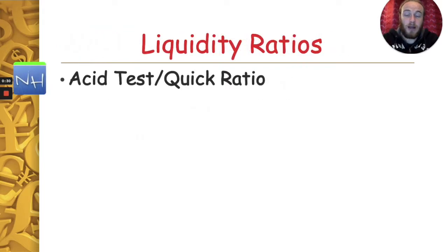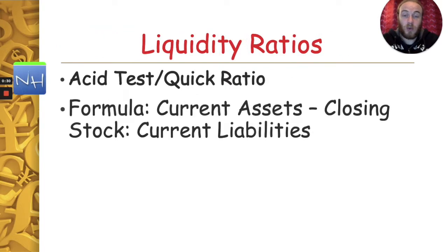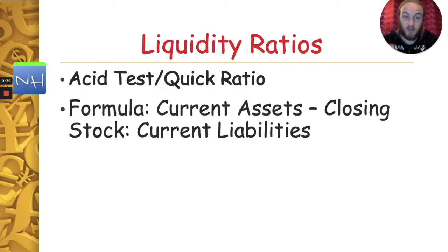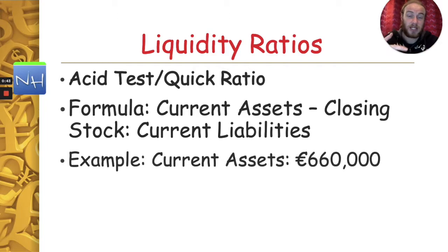So what is the formula? It's quite simply current assets take away your closing stock, divided by current liabilities. We'll look at why you take away the closing stock later in the video. The only difference between this and the current ratio is that we're taking away the closing stock.